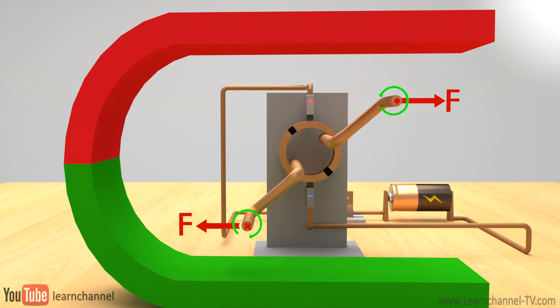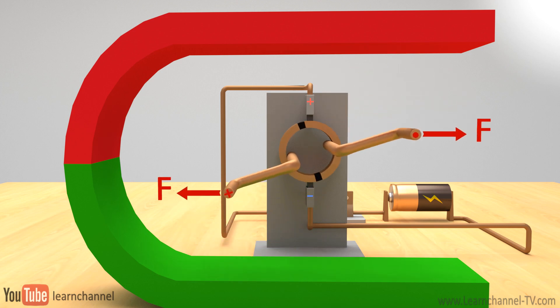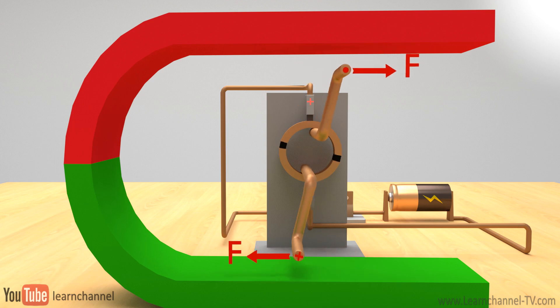When the coil turns 90 degrees, the brushes lose contact with the commutator and the current stops flowing through the coil. However, the coil keeps turning because of its own momentum.